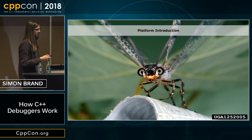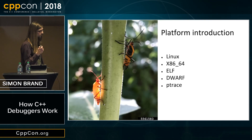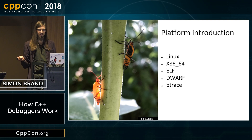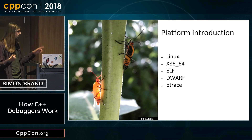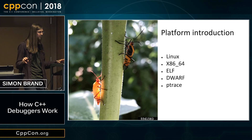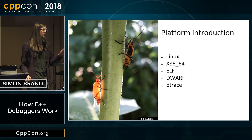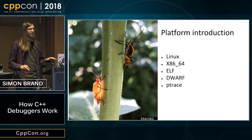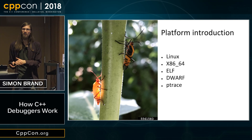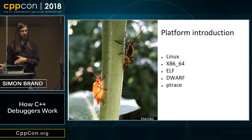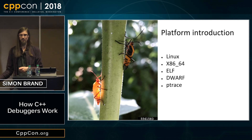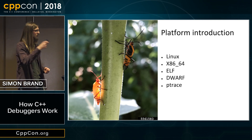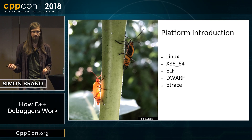I'll be focusing on Linux systems, on x86-64 with ELF as the binary format. You don't need to know what that is yet. Similarly for DWARF, which is the debug format, and ptrace as the main interface library. Most of the concepts I'll talk about are transferable to other platforms — the function calls will change and you might be working at a different level of abstraction, but the general concepts will apply.